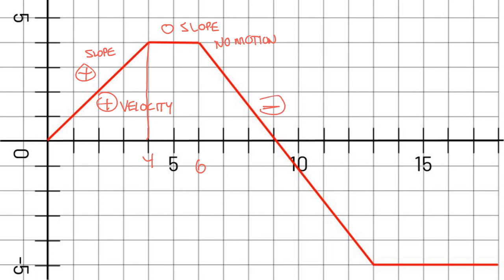Next, there is a negative velocity with a negative slope, meaning the object is moving in a negative direction. Then finally, there is a zero slope again — zero slope means no motion. We're going to look at this in more detail, figuring out the slope exactly and what all of this means on a position time graph in the next lesson. Once you've finished watching the video, taking the guided notes, and doing the assignment, you can take the exit ticket and move on to the next lesson.